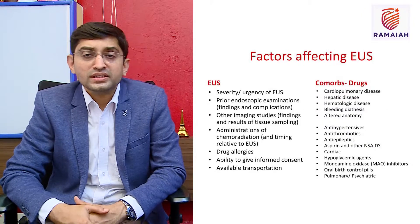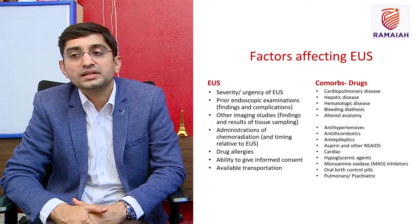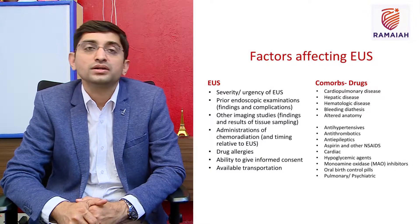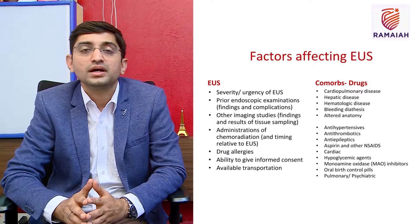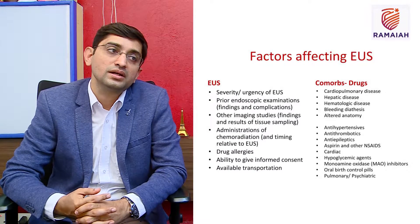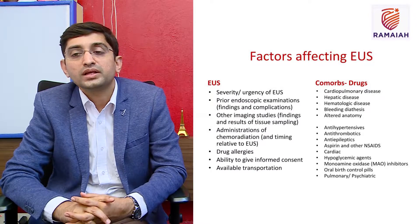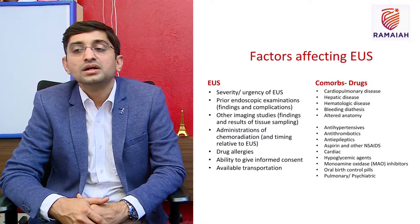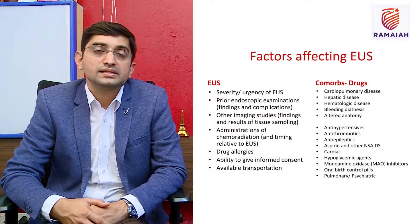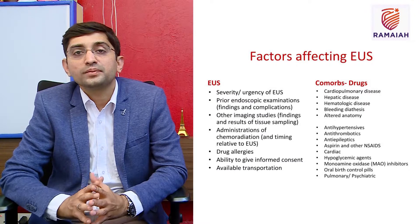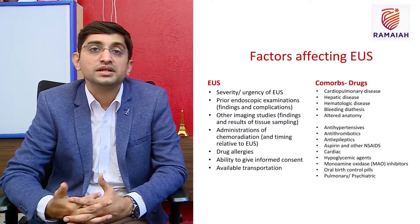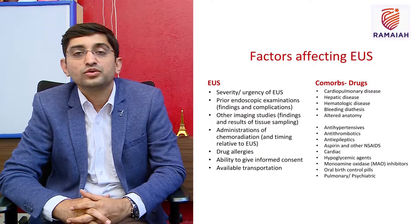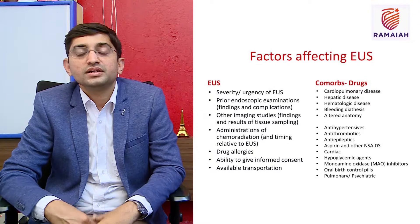Factors affecting EUS: first, consider urgency — do not jump straight to an EUS scope, as the transducer at the tip is around a centimeter. Always perform a regular diagnostic upper GI endoscopy first to get the road map, determine the safe limit for advancing the EUS scope, and never push if there is difficulty since you are working with ultrasound vision. Other imaging like CT showing a periluminal lesion can act as a road map, helping identify the needle path.